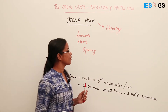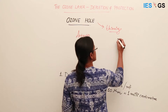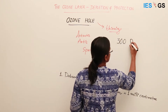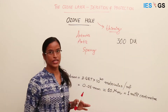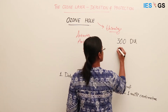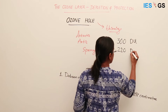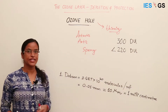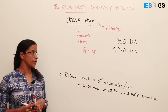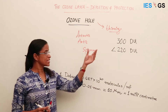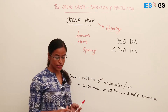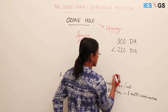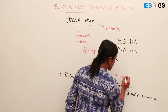Ozone thickness is normally measured in Dobson units. The normal thickness is 300 Dobson units, and when the thickness goes below 220 Dobson units, we say that there is an ozone hole. The Dobson unit measures the thickness of ozone by calculating the number of ozone molecules above a particular surface.